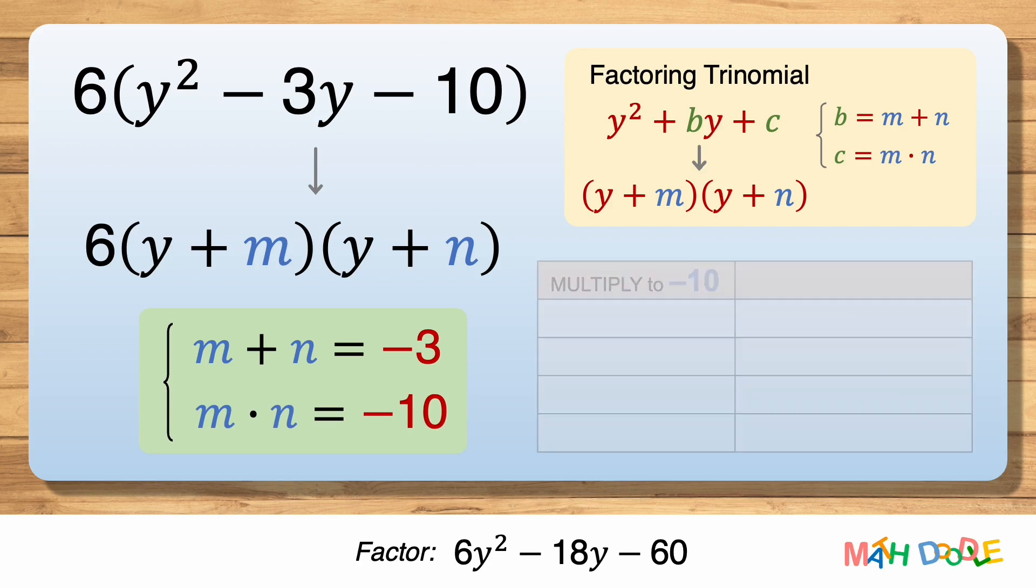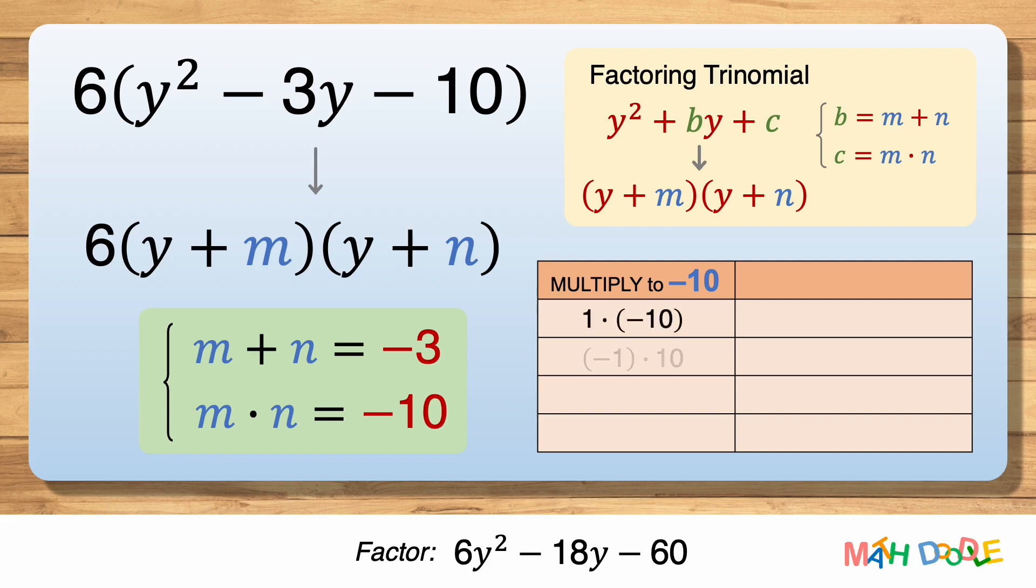First, let's think about all the combinations of two numbers that multiply to -10. 1 times -10 is -10, -1 times 10 is -10, 2 times -5 is -10, and -2 times 5 is also -10.